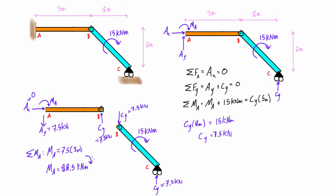So there we go, that's the answer. We found the reactions at A, so Ax is 0, Ay is 7.5 kilonewtons down, MA is 22.5 kilonewtons clockwise, and then the reaction here at C, the only reaction is just that vertical Cy there, which is 7.5 kilonewtons.